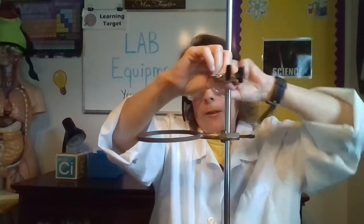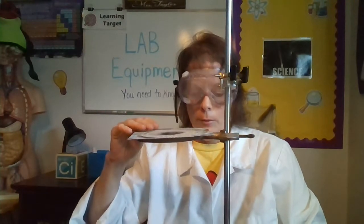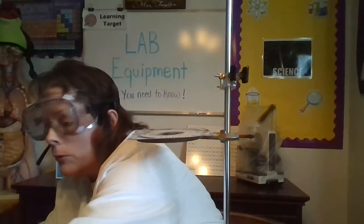You also have a ring here that we can put wire gauze on. You put that on top, and then you can put your Bunsen burner under it, which hooks to the gas. You light it, you have the flame, it goes underneath like that.